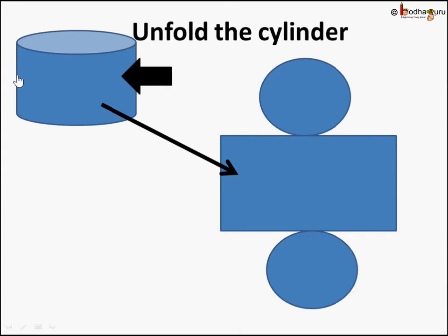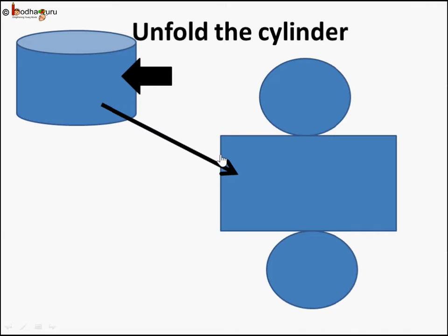Now let's find the area of the side which has the height. We know if we unfold the cylinder — the 3D shape — and open it, it will look like a rectangle. You can actually make a cylinder with paper, and when you open it, this curved face becomes a rectangle. The two circles are the top and bottom sides, whose areas we already calculated as πR² each. If you have a rectangular paper, you can fold it into a cylinder, or when you unfold it, it becomes a rectangle.